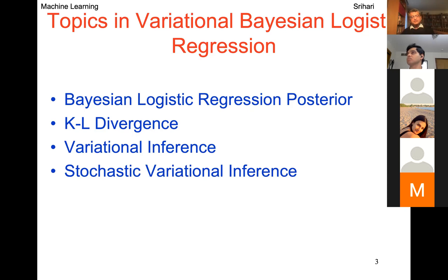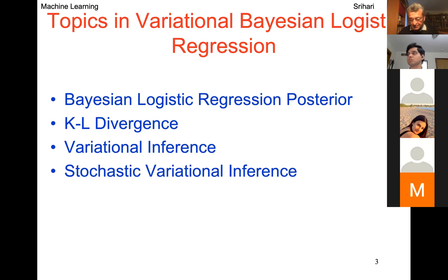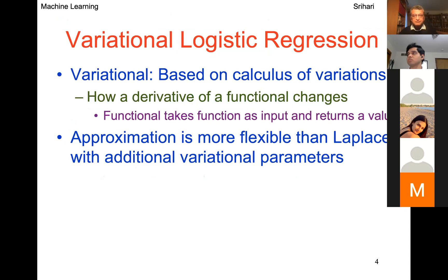Stochastic variational inference is a variation of variational inference. These are all mathematical topics, but worth knowing — at least the terminology, if not the method itself. My goal is to teach the method. Variational logistic regression is based on the calculus of variations — a whole field of calculus concerning how the derivative of a functional changes.